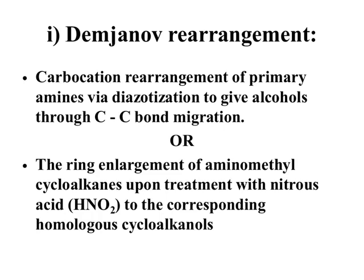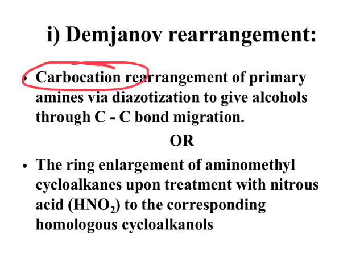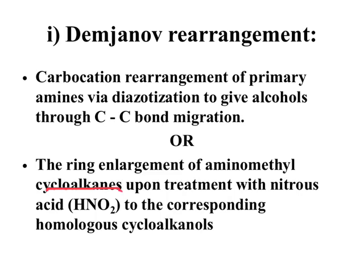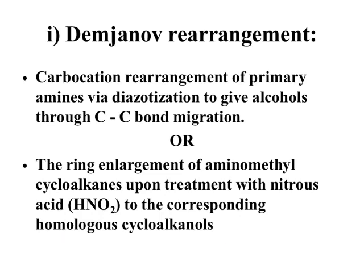Demgenov Rearrangement is the conversion of primary amines into corresponding alcohols through carbon-carbon bond migration, and during the rearrangement there is formation of a carbocation intermediate. Another way of defining Demgenov Rearrangement is the ring enlargement of aminomethyl cycloalkanes upon treatment with nitrous acid to corresponding homologous cycloalkanols. Basically, we get two kinds of alcohols — a mixture of products: one is the normal product and the other is the ring enlarged product.